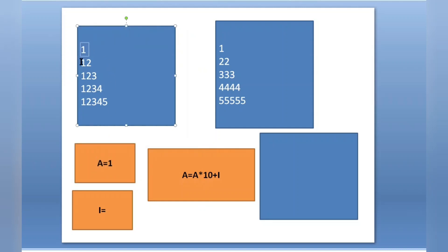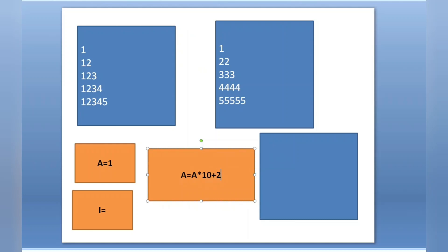The next time we are printing 12. To get 12 from 1, we can use the formula: a = a * 10 + i, where i is the loop variable. For example, a * 10 means 1 * 10 = 10, plus i. If i is 2, then 1 * 10 + 2 = 12. Next, if i is 3, then 12 * 10 = 120 + 3 = 123. So we can build up the value this way.